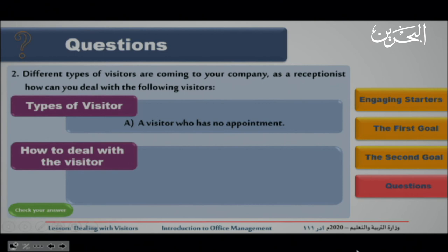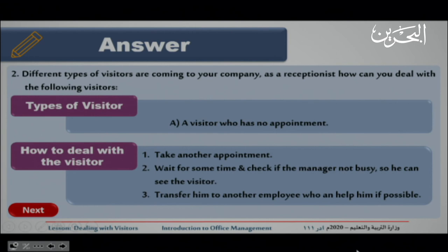Question two: different types of visitors are coming to your company. As a receptionist, how can you deal with the following visitors? Visitor A — a visitor who has no appointment: number one, take another appointment; number two, wait and check if the manager is not busy so he can see the visitor; number three, transfer the visitor to another employee who can help, if possible.